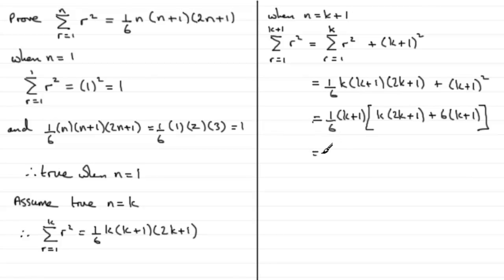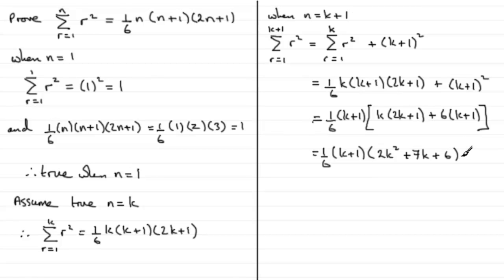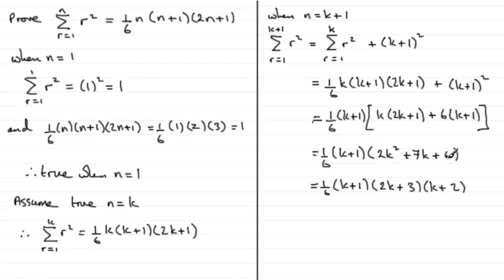Now we clean up the square bracket. Multiplying out: we get 2k squared, then k times 1 gives k, plus 6k gives 7k, and 6 times 1 gives plus 6. So the bracket becomes 2k squared plus 7k plus 6. Factorising this quadratic gives two factors: 2k plus 3 and k plus 2. Check that to confirm you get the quadratic.